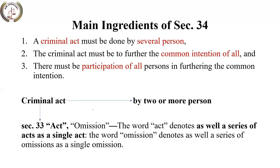Let's discuss the essential elements of Section 34. First, the criminal act must be done by two or more persons — the word 'several persons' is used in Section 34. Second, there must be a criminal act committed in furtherance of a common intention. Third, all persons — two or more — must have participation and contribution to the whole offense. All three elements are necessary to establish liability under Section 34. If all three are present, then liability under Section 34 is established.